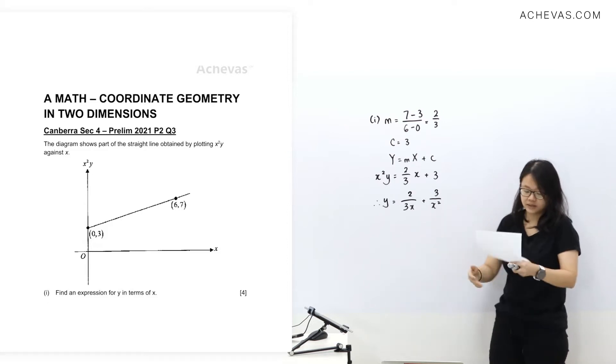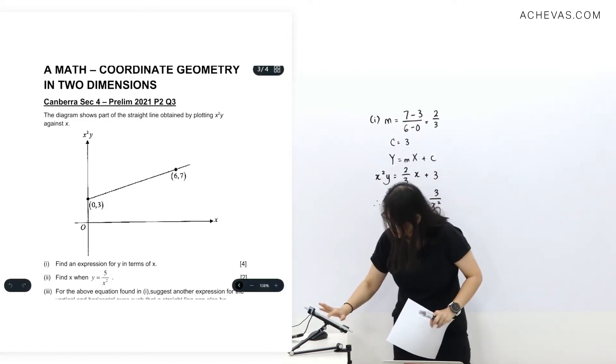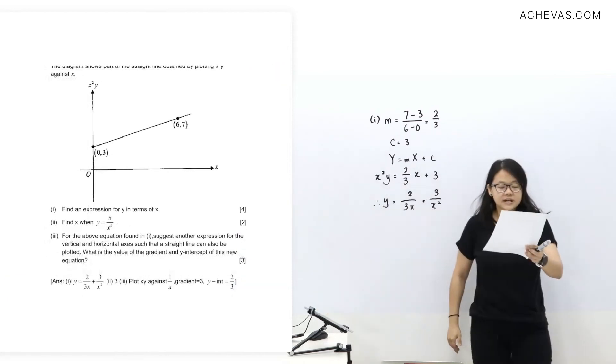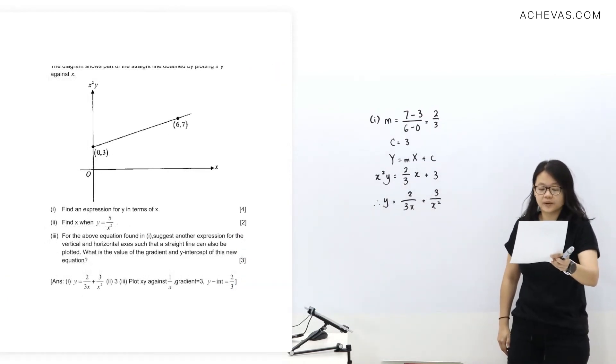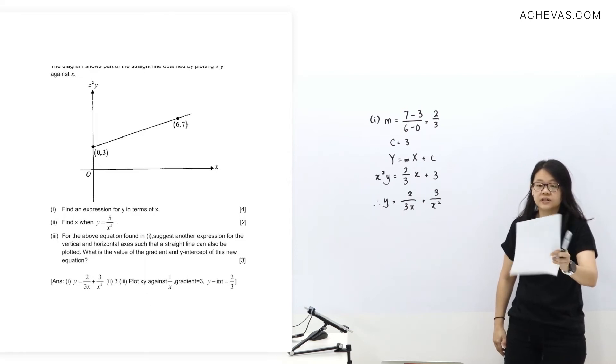That's for part 1. Let us now take a look at question part 2. Find x when y equals 5 over x squared.